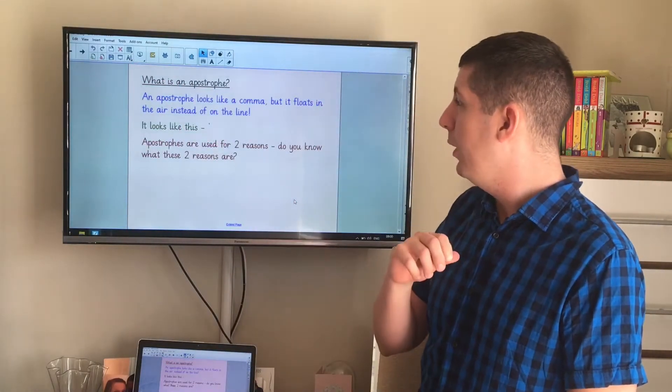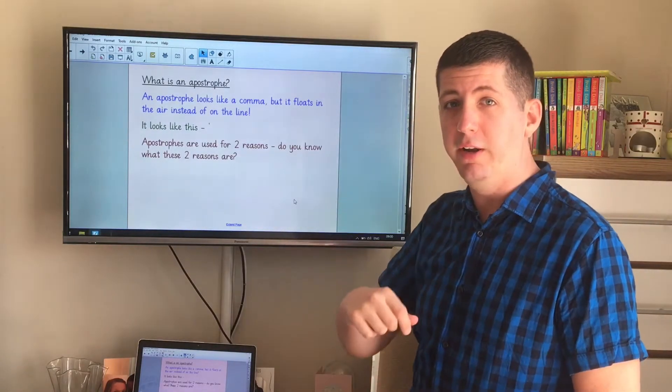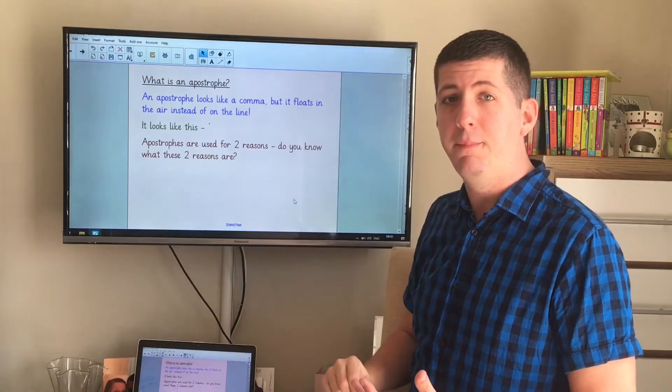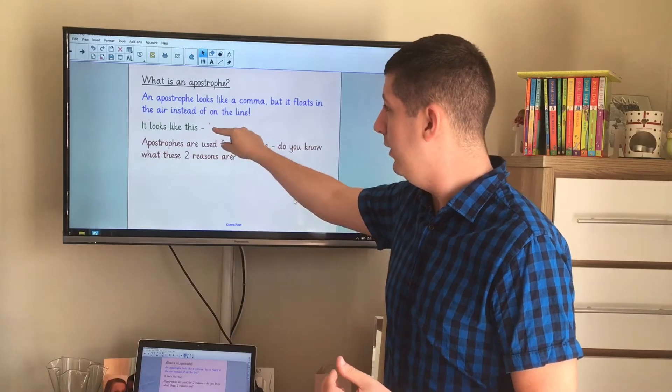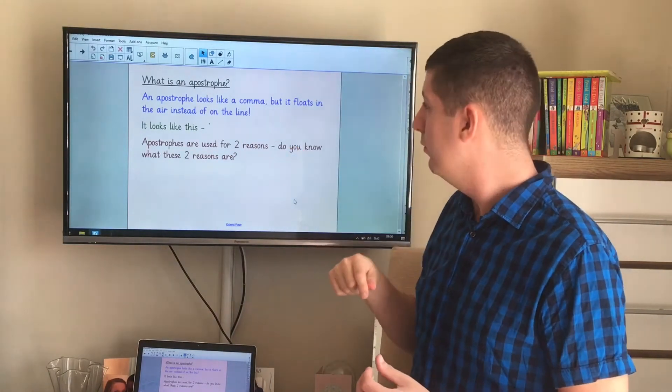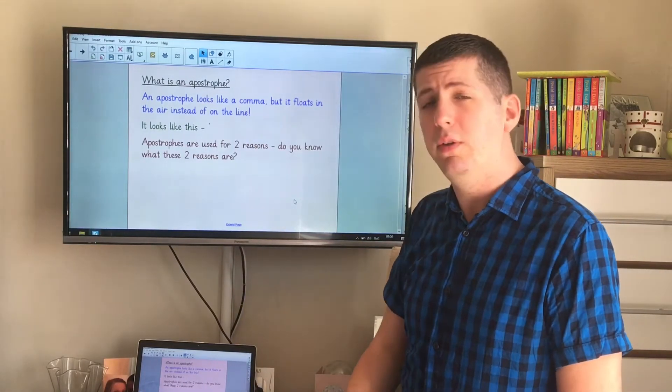So what is an apostrophe? Well it looks a little bit like a comma. Commas sit below the line, they float on the line nicely, but apostrophes float up in the air. They look exactly the same except instead of sitting on the ground with the rest of the letters, they float up in the air with all the ascenders. Apostrophes are used for two different reasons. Do you know what these two reasons are?